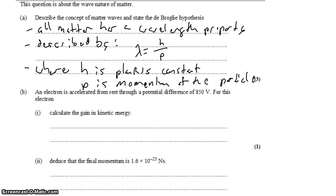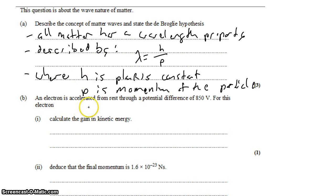Let's jump into some calculations. An electron is accelerated from rest through a potential difference of 850 volts. We want to find the gain in kinetic energy.